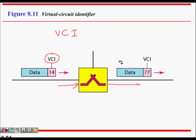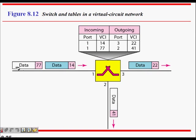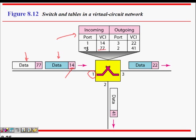Each packet has a virtual circuit identifier. It comes in on some port and goes out of another port, with a VCI for each link. For example, data packets arrive on port one — packet one with VCI 14, packet two with VCI 77. This switch has a routing table with incoming port and VCI mapped to outgoing port and new VCI. When the packet with VCI 14 arrives on port one, the table says: forward it to port 3 and change the VCI to 22.